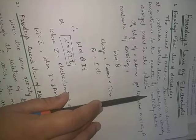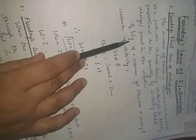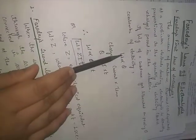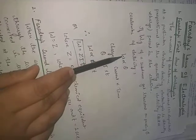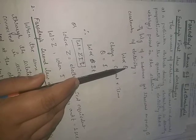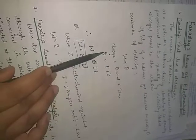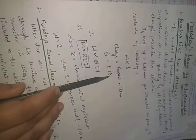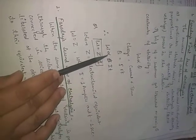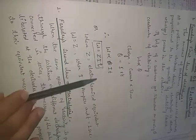During the process of electrolysis, suppose W is the amount of substance which gets liberated and Q is the amount of electricity passed. According to the first law, W is directly proportional to Q. Since charge Q equals current I multiplied by time T, we get W is proportional to I×T.